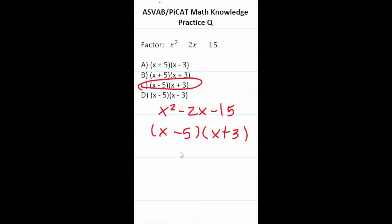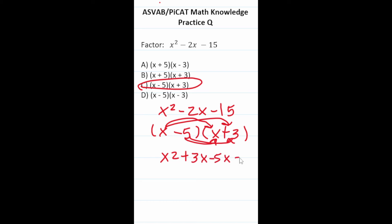If you wanted to quickly check your work, you can multiply this out by foiling it. x times x is x squared, x times 3 is 3x, negative 5 times x is negative 5x, and negative 5 times positive 3 is negative 15. This reduces to x squared minus 2x minus 15, confirming our answer.